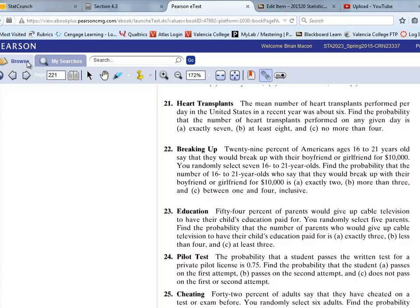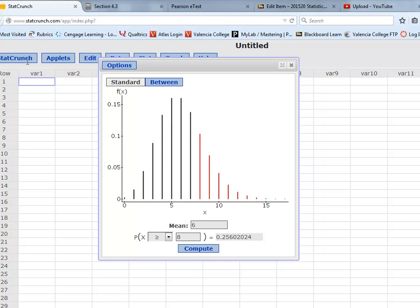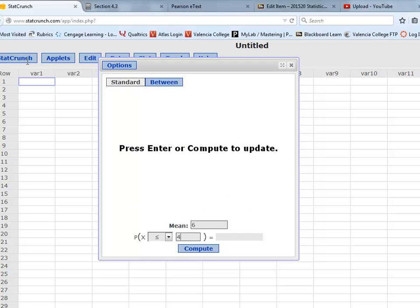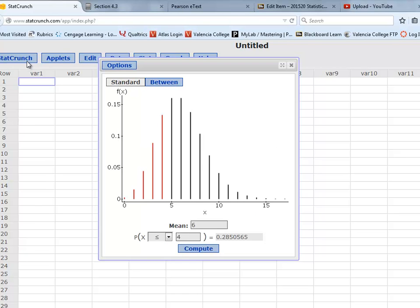So we want 4 or 3 or 2 or 1 or even 0 heart transplants on a given day. So we're going to do 4 or less. So when I come to StatCrunch, again, I have the same mean. I'm going to do less than or equal to 4. And when I compute,